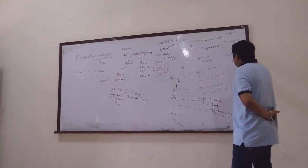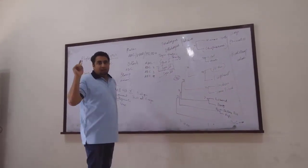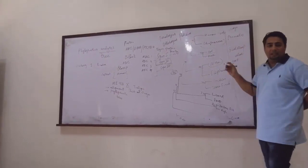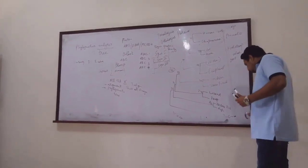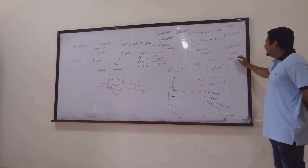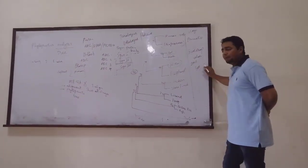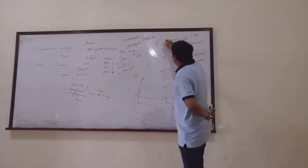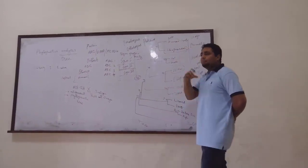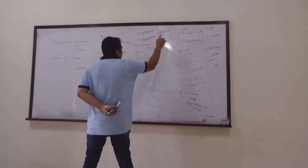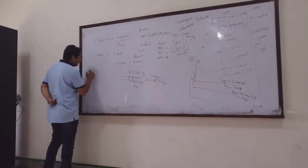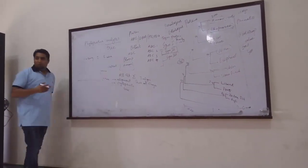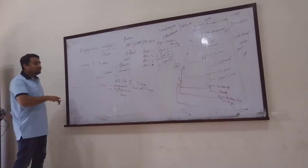So with MegaX we generate this bootstrap value and then generate the tree. For the bootstrap value you just have to choose 1000 replicates. So what does this bootstrap value mean? We are working on 1000, or sometimes in research 500, but 1000 is the good one. This means that these two sequences were aligned 1000 times with random sampling from the sequence.